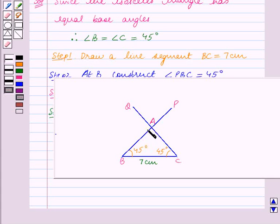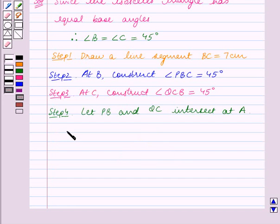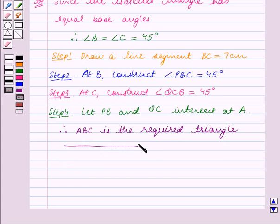Thus we have constructed an isosceles triangle ABC in which BC is equal to 7 cm, and both the base angles, angle B and angle C, are equal to 45 degrees. Therefore ABC is the required triangle. With this we end our session. Hope you enjoyed the session.